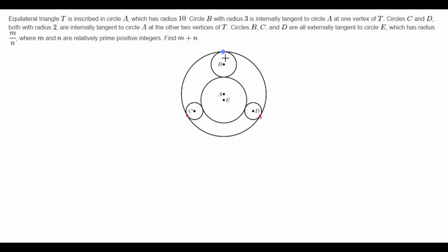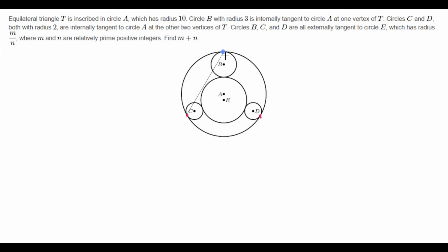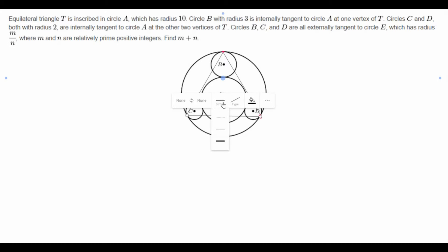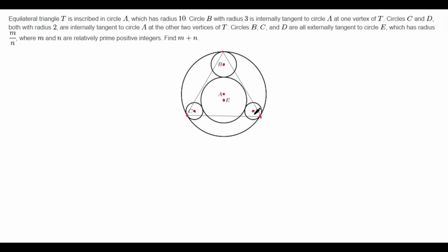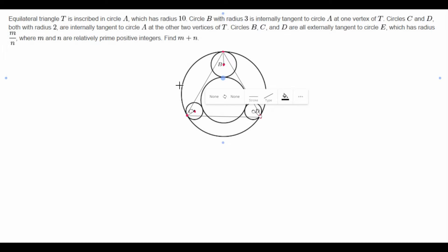So let's draw that triangle right now. And now more lines. Hopefully you guys can see that. So we now have triangle T. Now let's draw the radii. We have points here, here, here, here, and here. This one has length 3, this one has length 2, this one has length 2.